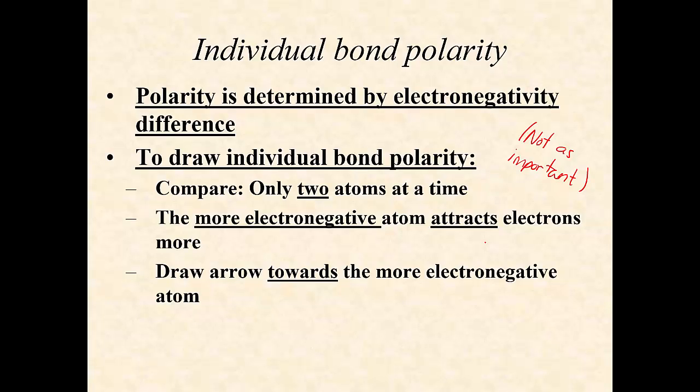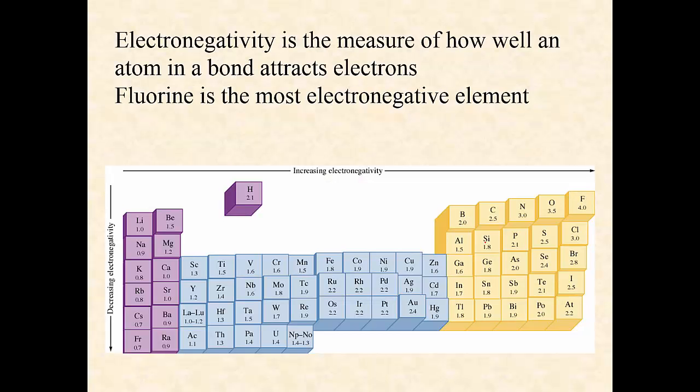What we do is we can draw an arrow towards the more electronegative atom. Just remind yourself, electronegativity, if you don't remember the definition, is how well an atom in a bond can attract the electron. I gave my example of my daughters sharing a car, but they really didn't share it evenly, even though they were technically sharing. It's an uneven distribution.